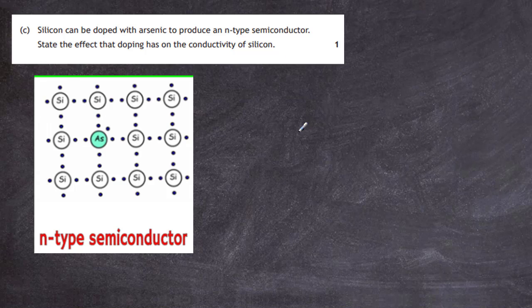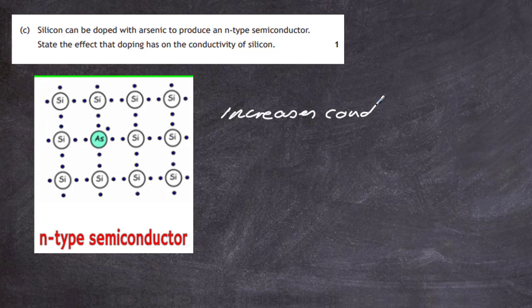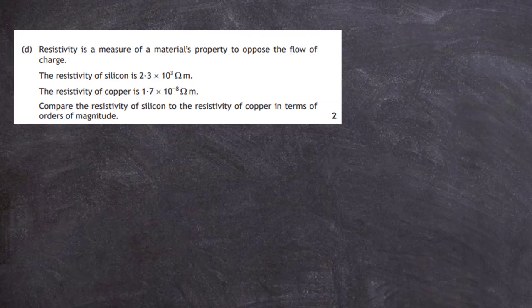The simple answer is: doping increases the conductivity of silicon. That gives you the one mark for this part.